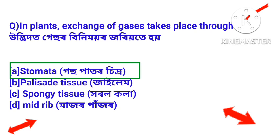When plants release oxygen gas and exchange other gases — utbidor zetiya oxygen gas potan kori, hydrogen gas har ni kharaan kori — gas exchange in plants takes place through stomata.